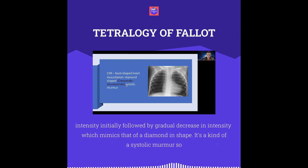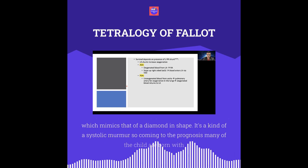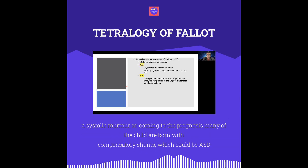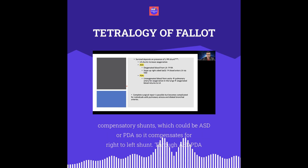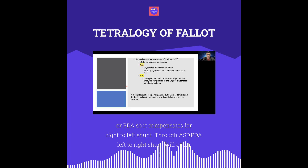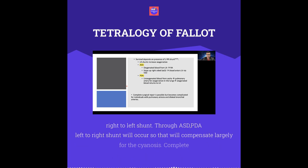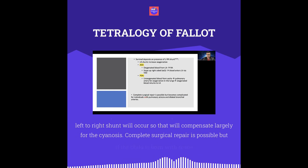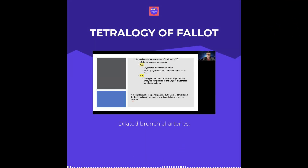Regarding prognosis, many children are born with compensatory shunts such as ASD or PDA, which compensate for the right-to-left shunt through the VSD by providing a left-to-right shunt — this largely compensates for the cyanosis. Complete surgical repair is possible, but if the child has other anomalies such as dilated bronchial arteries, complete surgical repair may be futile.